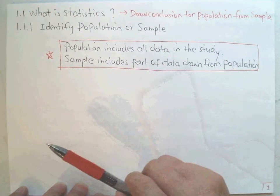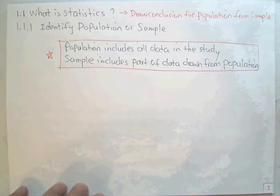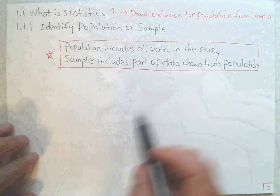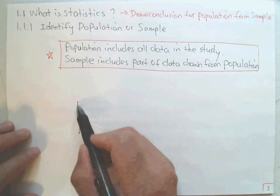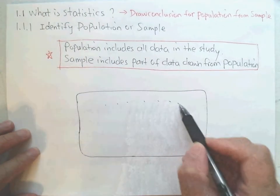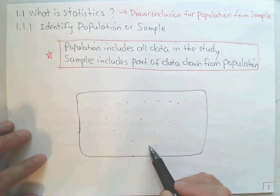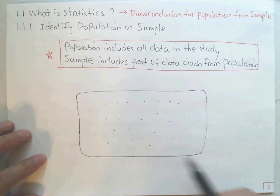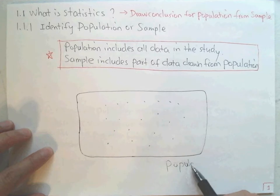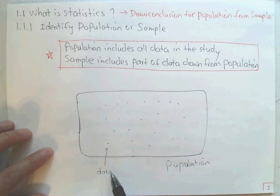What does this mean? If I draw a graph — population is all the data. It's like all the data in this. If I say this is all the data, each dot, each point is a data point. And all of this is a population. We simply have individual data points, and all the data together is here.